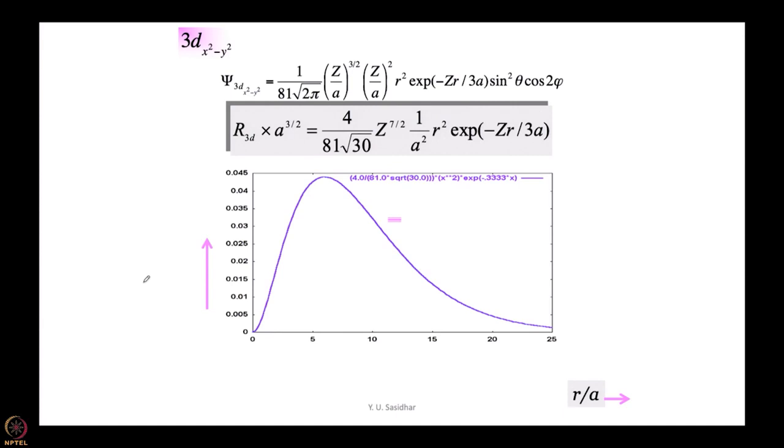Let us come back and see what a plot of 3d x²-y² would look like. We have a constant multiplied by r² multiplied by e^(-zr/3a) multiplied by sin²θ cos 2φ. The radial part again goes through a maximum: when r equals 0 it is 0, r equals infinity it is again 0, and in the middle r² keeps increasing while e^(-zr/3a) keeps decreasing, so the product of course would go through a maximum.